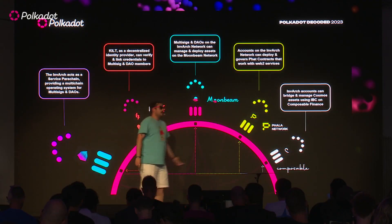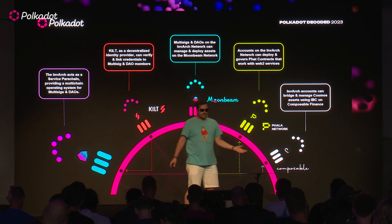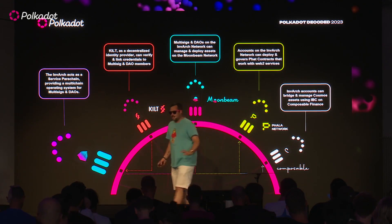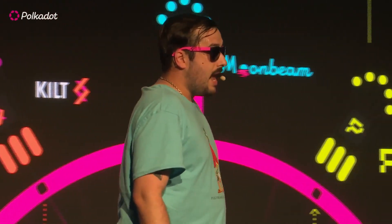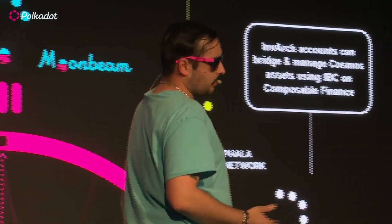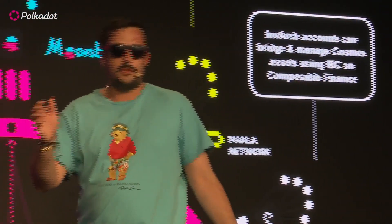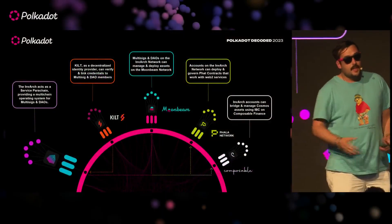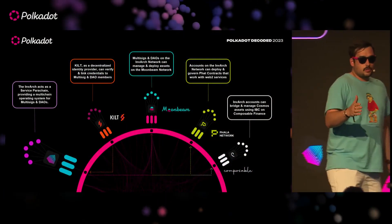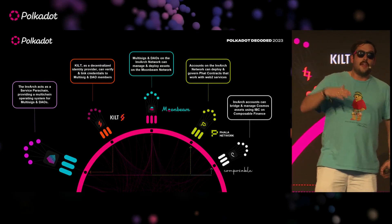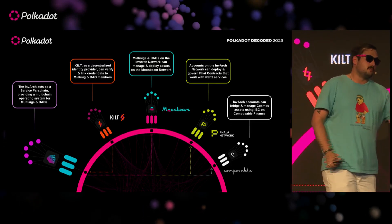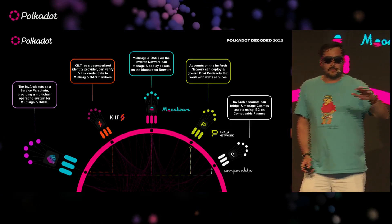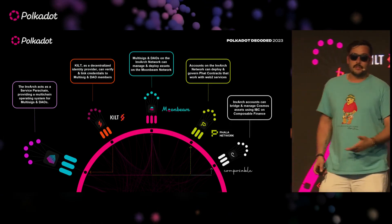Using a DAO or multi-sig on Invarch, this account can then go and access the entire sea of applications and dApps being built on, say, Moonbeam — and explore all those. Just like a regular user going to apps to do a swap, lend, or buy an NFT — it's the same exact experience with Saturn. That call is automatically generated into a proposal, conveniently there for members to vote on, and once approved, it executes on that network.